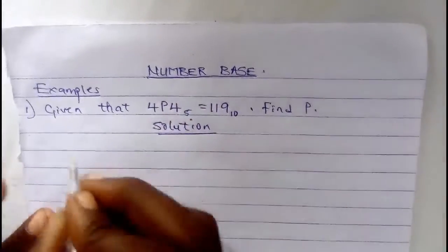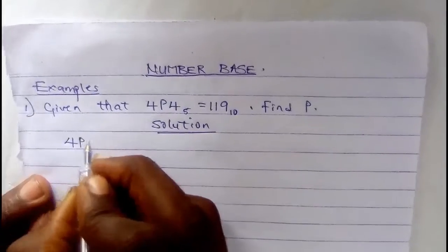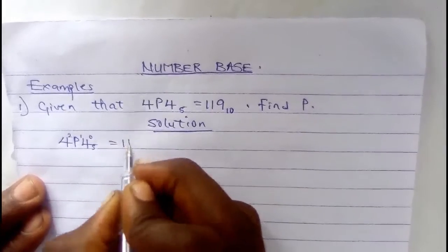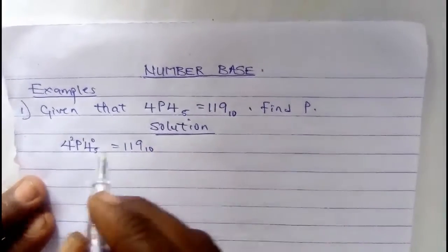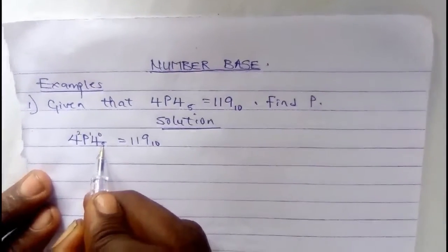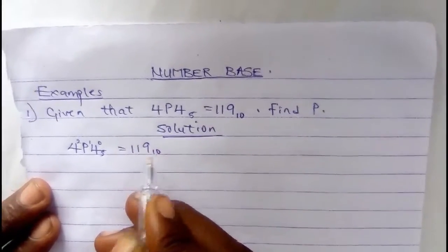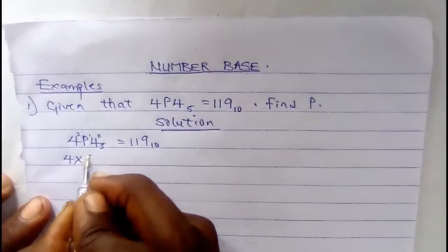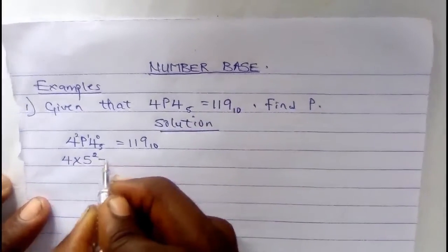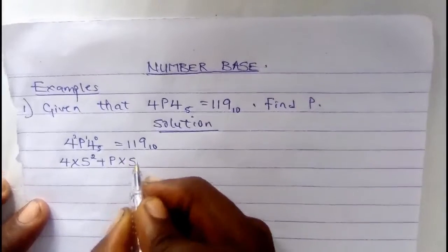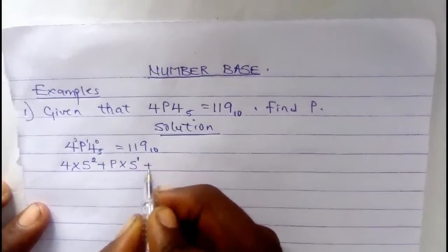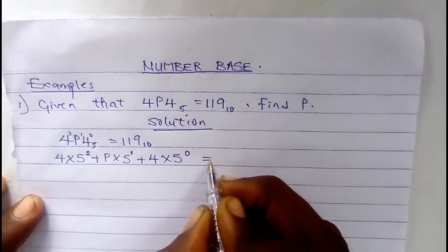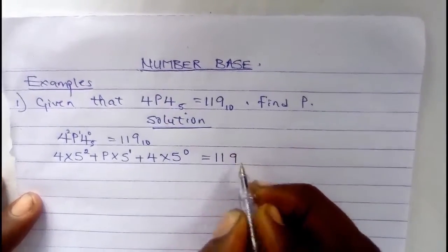Looking at 4p4 to the base of 5, the positions are: the rightmost digit is position 0, next is position 1, then position 2. This equals 119 to the base of 10. We convert from base 5 to base 10 — the right side is already in base 10, so we don't touch it. We write: 4 times 5 to the power of 2, plus p times 5 to the power of 1, plus 4 times 5 to the power of 0, equals 119.